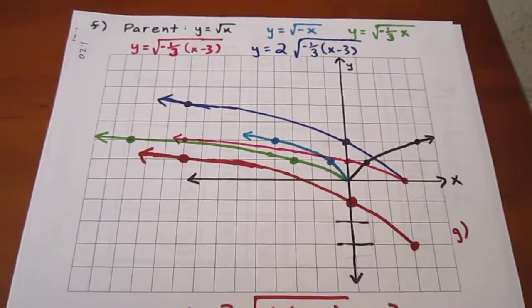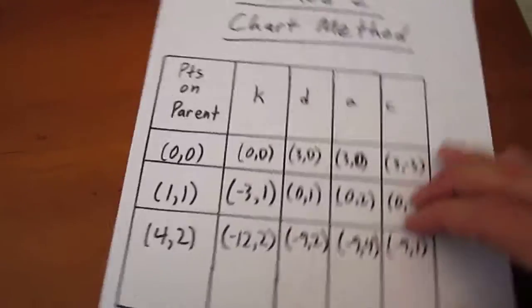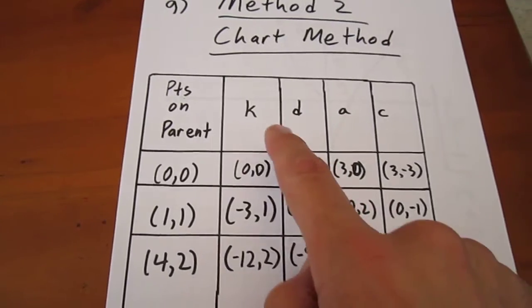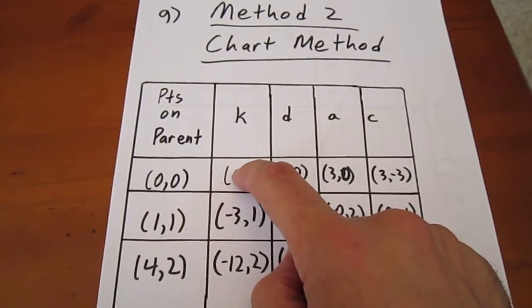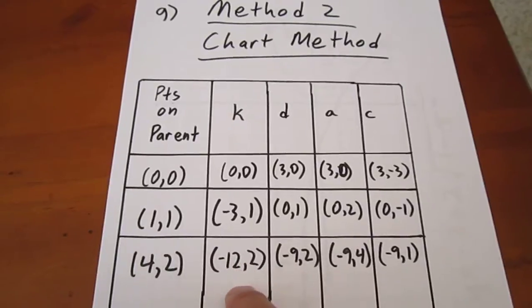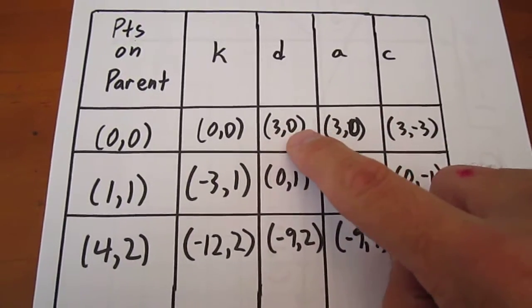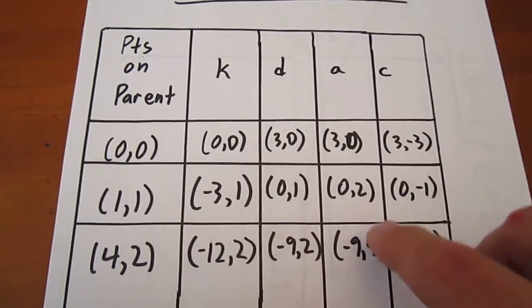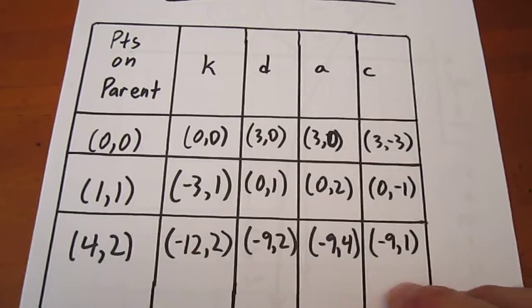Now, perhaps a quicker way of doing this is to consider what we call a table method. In this case, or a chart method, what we do is consider the 3 points on the parent function, and then we consider the effect of every one of these variables. When the k-value is negative 1 third, we divide each x-coordinate by negative 1 third. That has the impact of reflecting in the y-axis and horizontally stretching by a factor of 3. We then add a value of 3 to each x-coordinate for the horizontal translation. We then multiply each y-coordinate by 2 for the vertical stretch, and we subtract 3 from each y-coordinate for the vertical translation down 3 units.